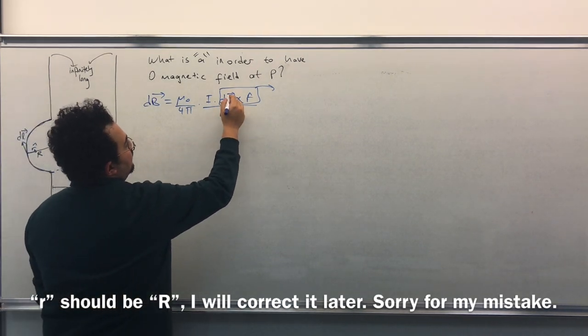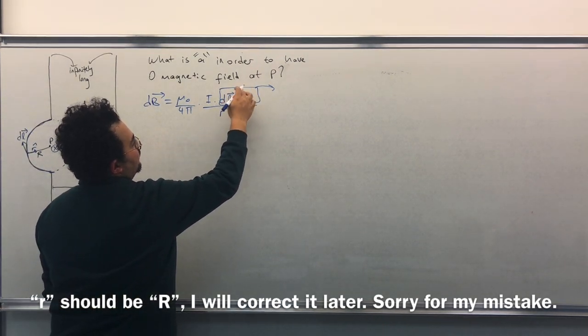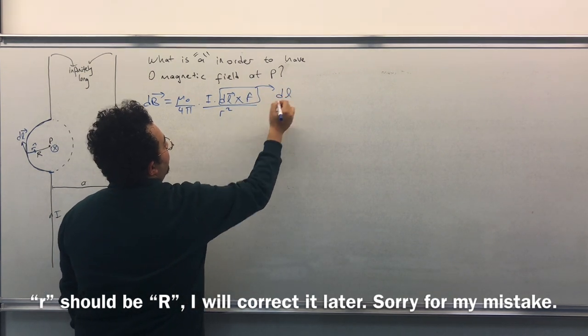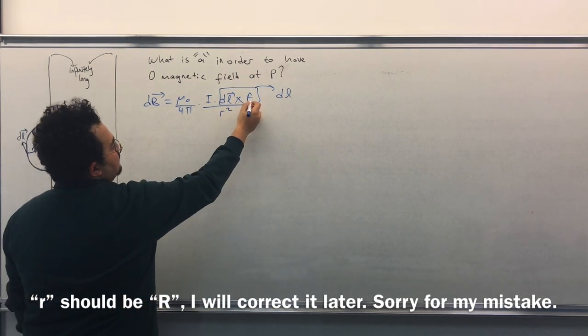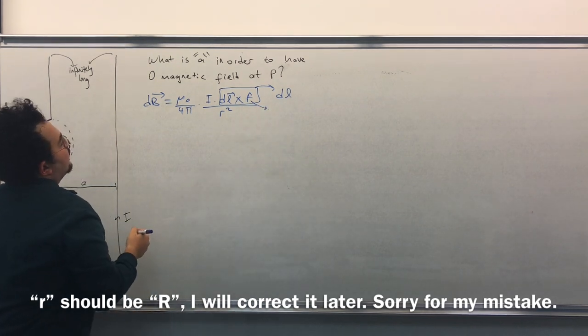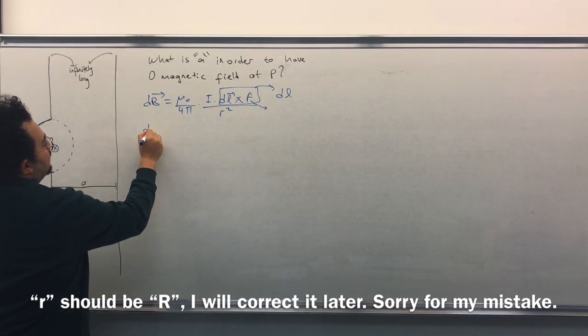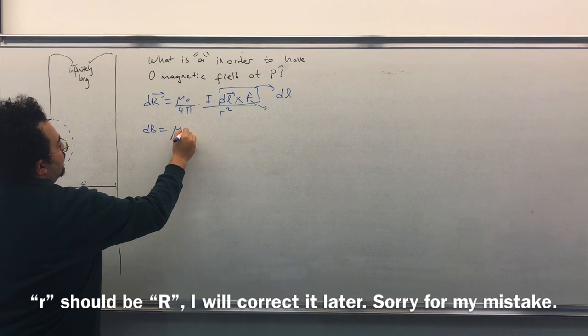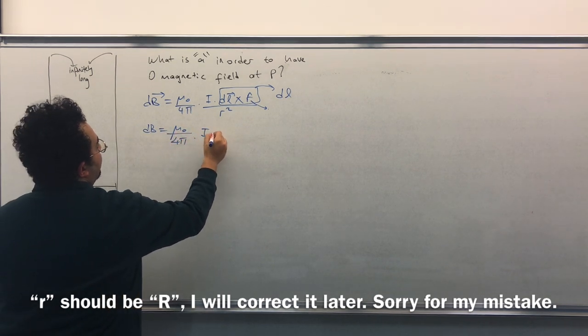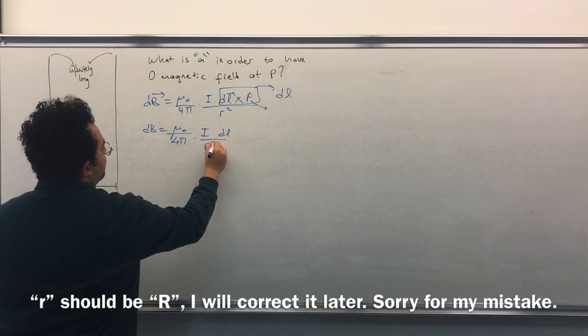So we can get rid of vectors. This will be just dL because this is the unit vector. So dB will be equal to mu zero over 4 pi times I dL over r square.